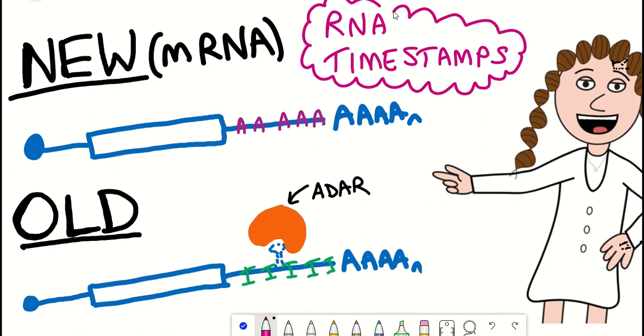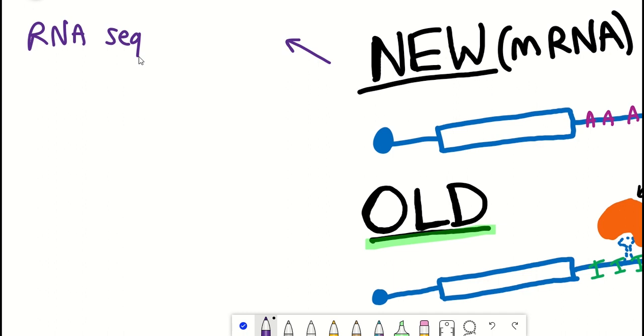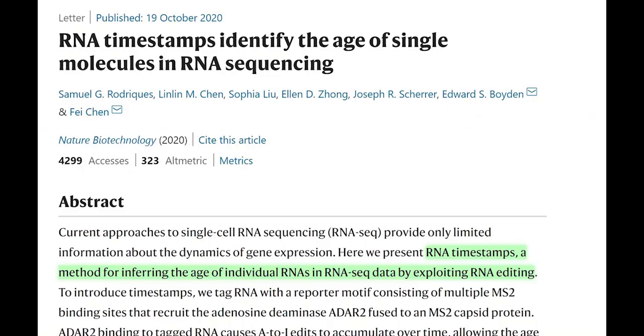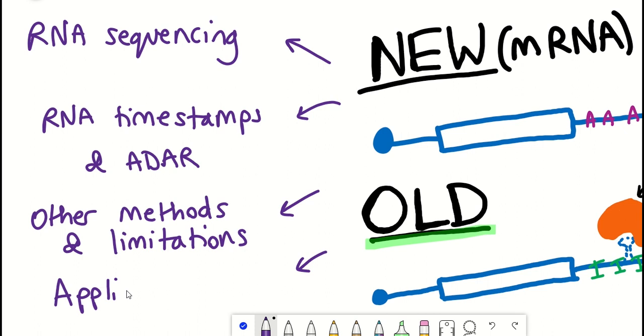I'll begin by giving a very general background to the principle of RNA sequencing and the current limitations with using it. And then we'll focus on this recent publication and introduce you to a protein called ADAR and how this technique is working to be able to identify the age of RNA within a cell and how they've also managed to apply this to single-cell RNA sequencing. And then we'll talk about some other techniques and discuss some of the benefits to each of them and also the potential applications of using these different techniques.